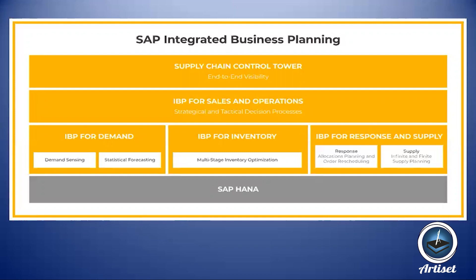These two modules — Demand and Response & Supply — serve as the two sides of Sales and Operations that need to be balanced. Additionally, IBP for Inventory handles inventory optimization so it's not a financial loss and client demand is met. The Supply Chain Control Tower monitors everything against thresholds — for example, if stock falls below a given limit, a notification is sent — alerting users to discrepancies or emergency issues requiring action.